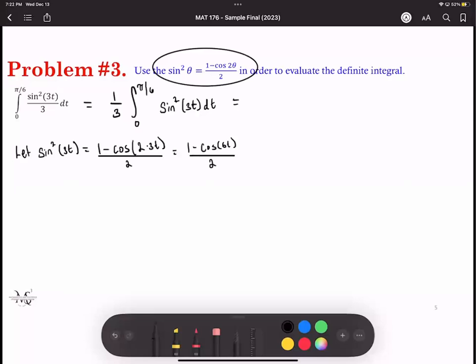So when I rewrite this integral, instead of it being in terms of sine, it's now going to be in terms of cosine. We're going to get one third of the integral zero to pi over six of one minus cosine six T over two DT.